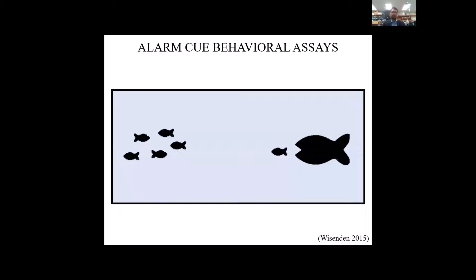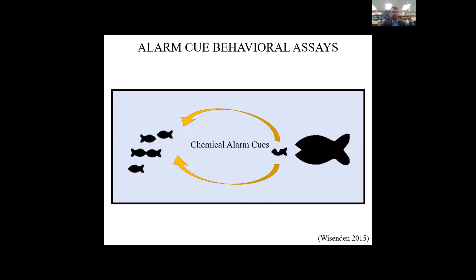This animation by Wisadin 2015 shows the chemical alarm cue system and how it works with anti-predator behavior. On the left you can see a group of normally foraging fish, and on the right you can see a fish that is about to be preyed upon by a predator. The predator takes a bite out of the preyed-upon fish and the epithelium is damaged, releasing chemical alarm cues into the water. The normally foraging fish perceive the chemical alarm cues and in turn have some sort of anti-predator response.